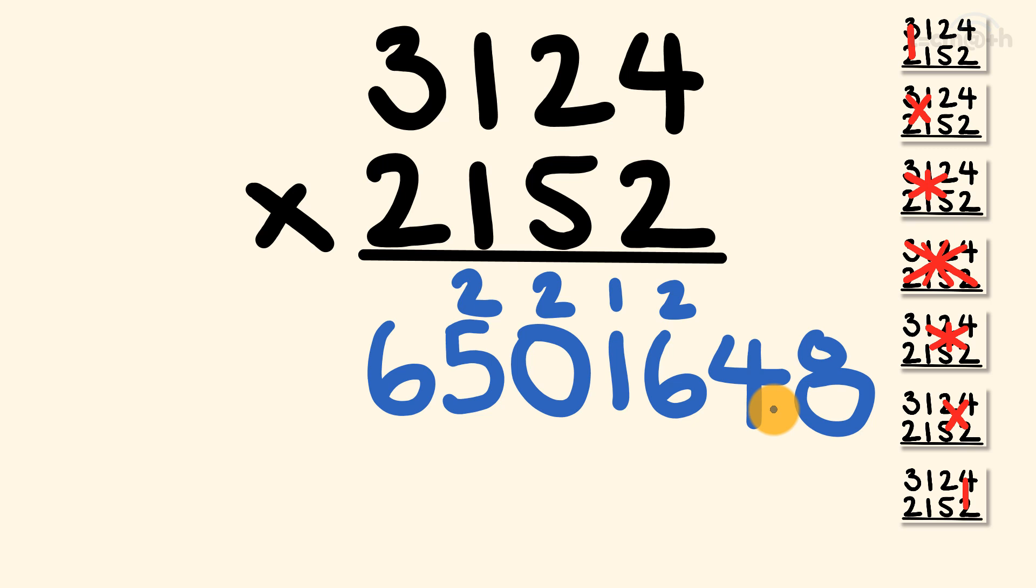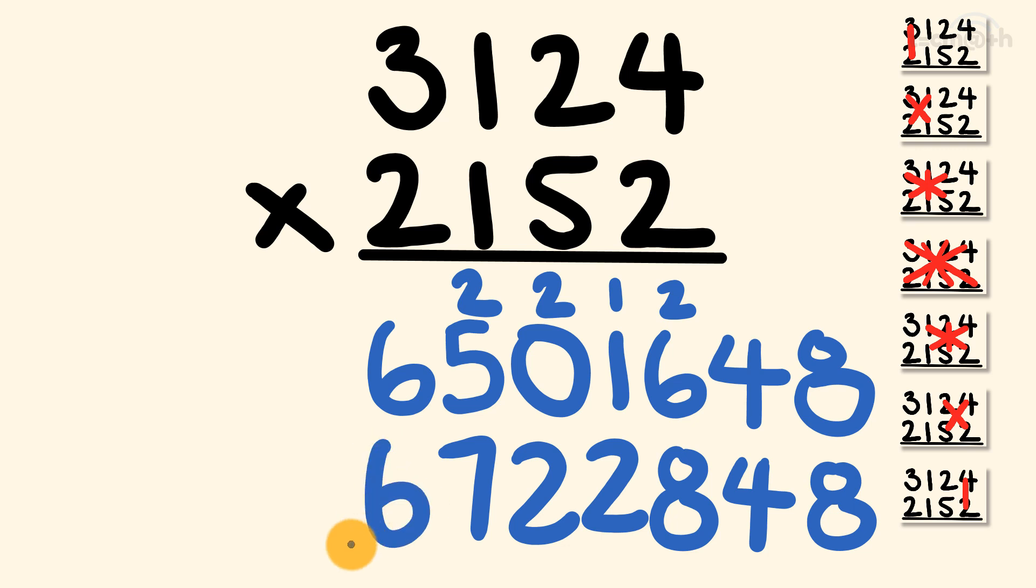Now we've pretty much got our answer here. We just need to finally go through and add all this up. So we have 8, 4, 2 plus 6 is equal to 8, 1 plus 1 is equal to 2, 2 plus 0 is equal to 2, 2 plus 5 is equal to 7. And that 6 carries down. We have our answer, 6,722,848.